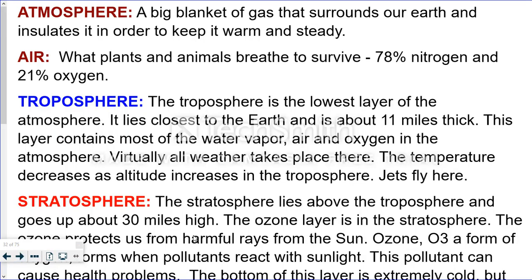Here are some characteristics of each layer. First of all, our atmosphere is like a big blanket of gas that surrounds the Earth and it keeps us warm. The air that we breathe contains 78% nitrogen and 21% oxygen.